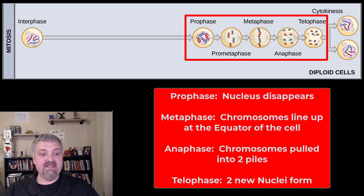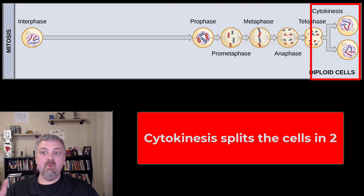So real quick, during prophase, the nucleus disappears. Now, so you have all your genetic material. The chromatin, the DNA has clumped together to form chromosomes and the nucleus has disappeared. So that's going to be prophase. During metaphase, the chromosomes line up at the equator of the cell or the metaphase plate. During anaphase, the chromosomes are pulled apart into two piles. During telophase, two new nuclei form. So now you have that one egg with two yolks. You have one cell with two nuclei. Then we end the cell cycle with cytokinesis, which is where this one cell actually splits into two.